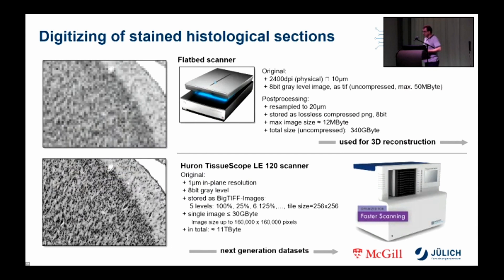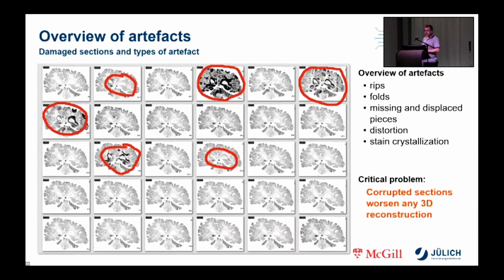Although the histological processing steps were carried out with a lot of know-how, the digitized histological sections show a large number of artifacts. One of the great difficulties and challenges is that there is a wide range of types of artifacts with varying degrees of severity, distribution and quantity. This makes any fully automatic processing a great challenge, but most of the artifacts must be repaired to achieve a good 3D reconstruction of the brain.